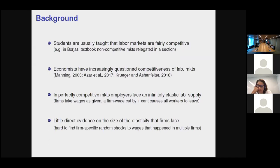In a perfectly competitive labor market, firms have no power to change wages — there is a market that sets wages for a lecturer, an associate professor, or a full professor. If firms cut wages by one cent, they lose all their workers because workers would go work for another firm at the market wage. So in a perfectly competitive labor market, the firm-level labor supply is perfectly elastic.